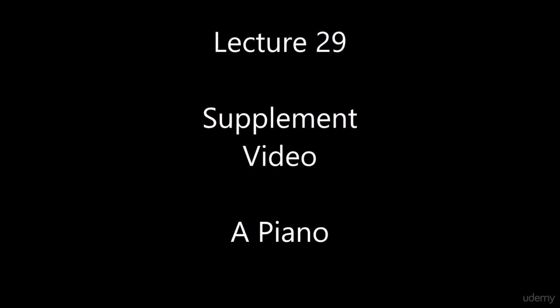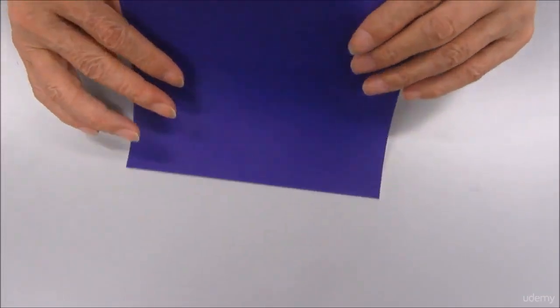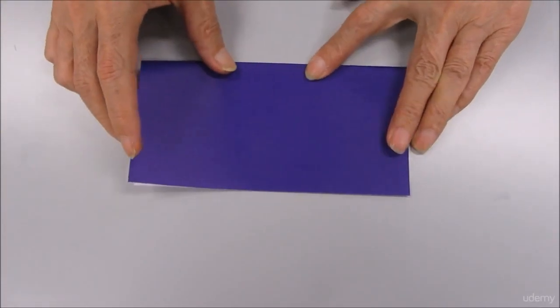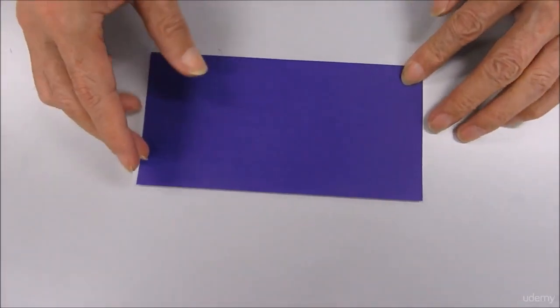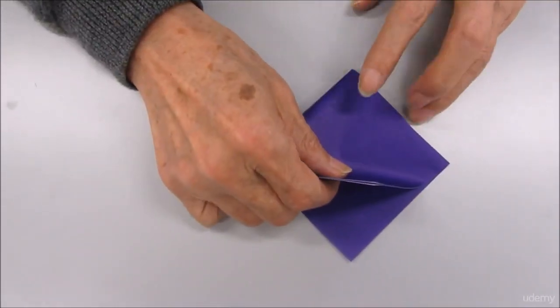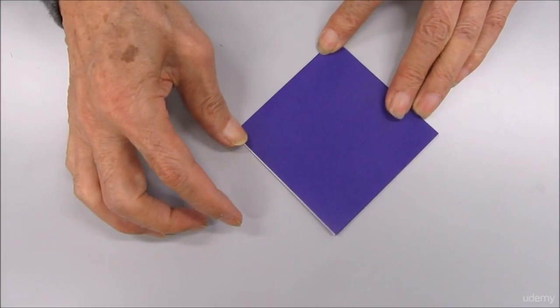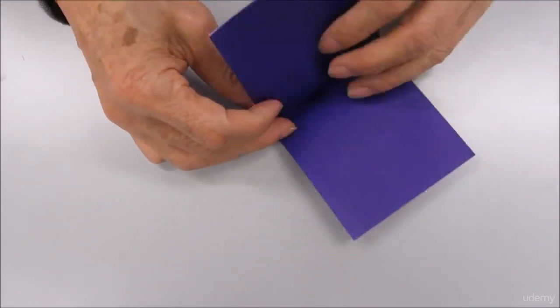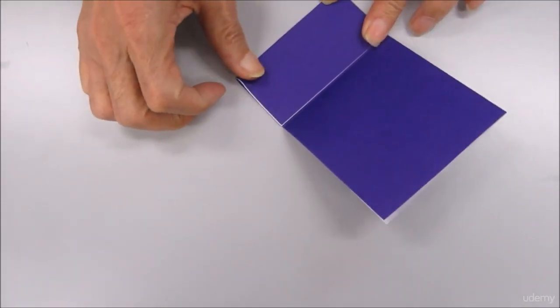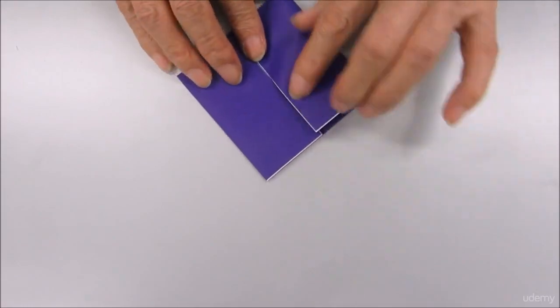Check the supplement video for the piano. Now, mountain folding to make a rectangle. Once again, unfold. Then fold small rectangles from the ends of the long rectangle.